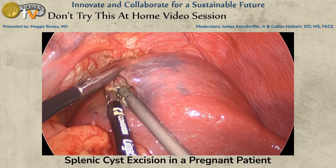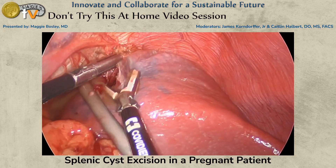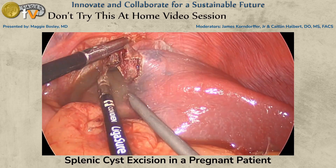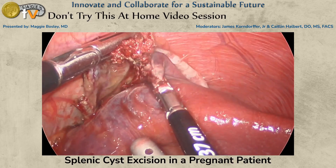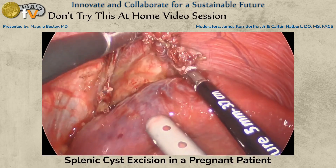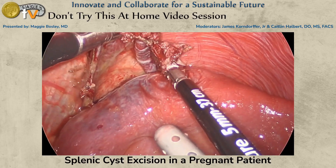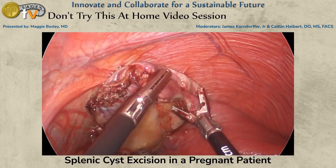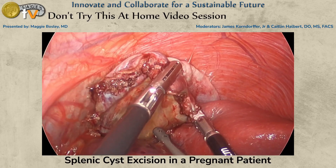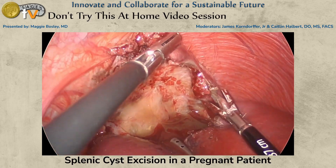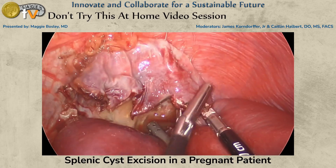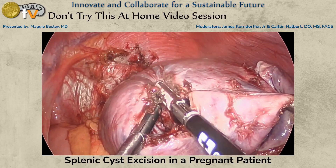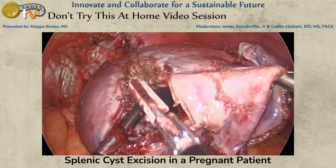We then used energy to begin taking off the anterior wall of the splenic cyst, continuing circumferentially around it. We will completely detach this and remove it as a specimen at the end of the case.